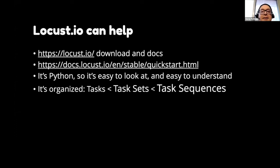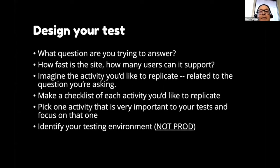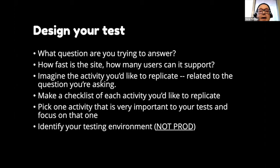The download and docs are available at the main site. I recommend reading the quick start — it's especially helpful for basic web app load testing, but not everything you want to load test falls exactly into that category. Remember that Locust is written in Python and it's organized: you define tasks, which can fit into sets of tasks, which can be organized into sequences. First, you design your test. You figure out what question you're trying to answer — how fast, how many users can it support. In the case of an API, it'll be a GET or a POST on an endpoint.